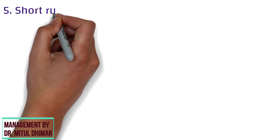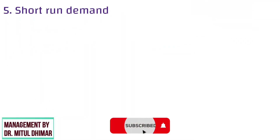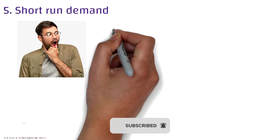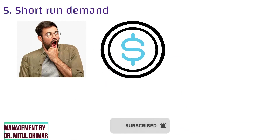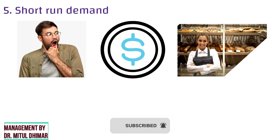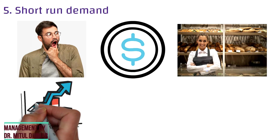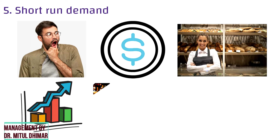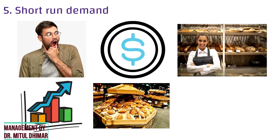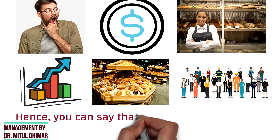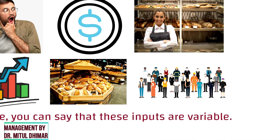Number 5: Short Run Demand. Short Run Demand refers to how people will immediately react to price changes while certain elements are fixed. For example, you run a bakery, and when a sudden increase in demand approaches, you will have to increase the raw materials as well as the labor. Hence, these inputs are variable.